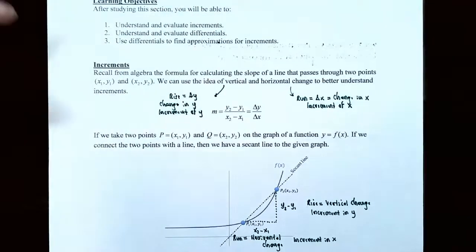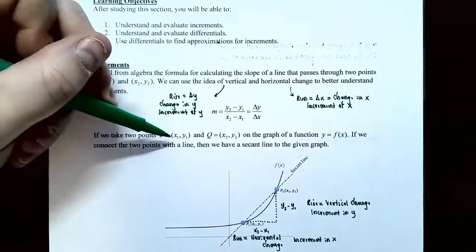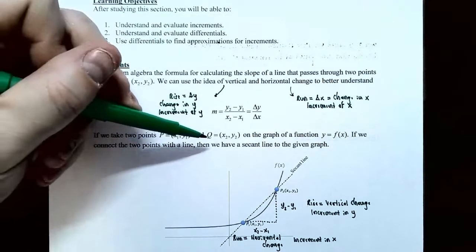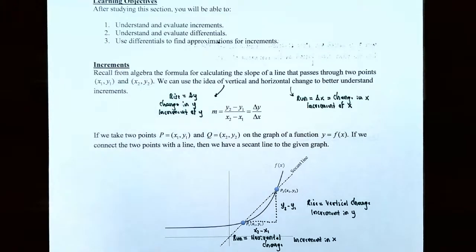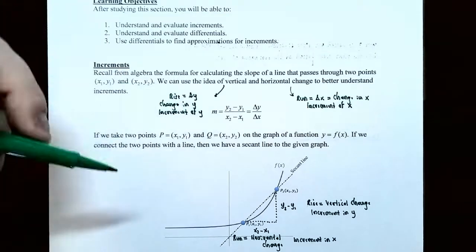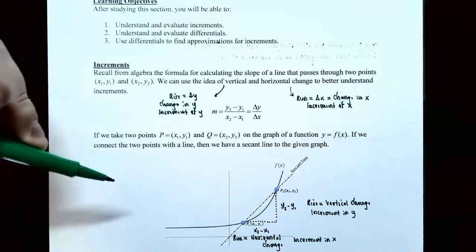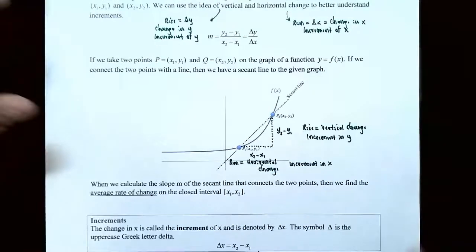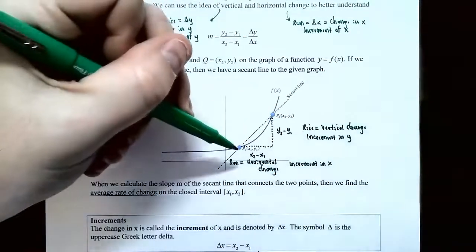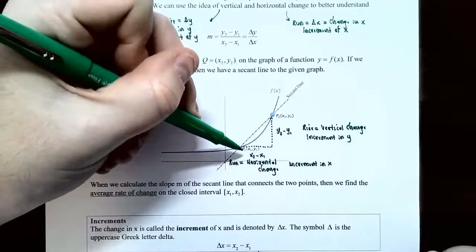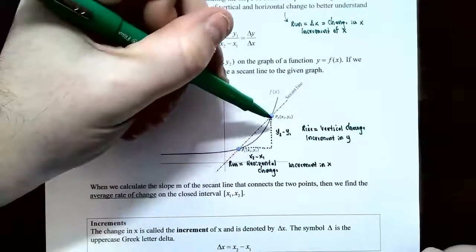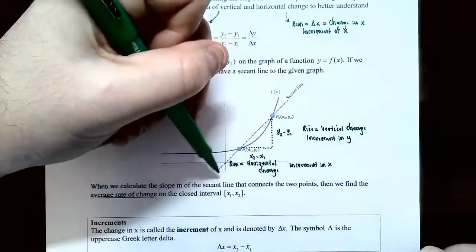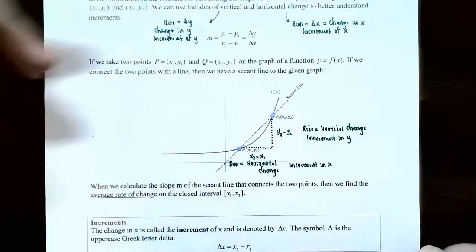If you take two points P at (x1, y1) and Q at (x2, y2) on the graph of y equals f of x and connect them with a line, that's called the secant line. You have point P at (x1, y1) and point Q at (x2, y2), and you connect them with the secant line.